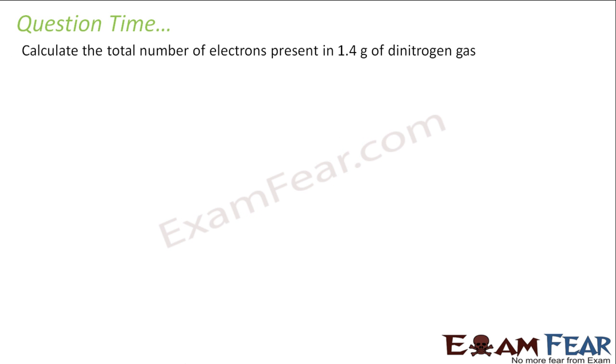Calculate the total number of electrons present in 1.4 gram of di-nitrogen gas. See, to find the number of electrons, first thing you have to find is number of molecules. I can multiply with 14 because each molecule has electrons. To find the number of molecules, I have to find the moles of gas.